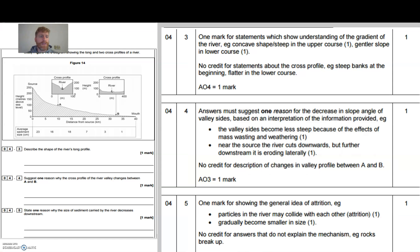Okay, so let's have a look at the answers then. Question one asked you to describe the shape of the river's long profile from figure 14. You got a mark for statements which show understanding of the gradient of the river. For example, if you said it was a concave shape, or if you said it was steep in the upper course, that was a mark. If you said it had a gentle slope in the lower course, that was a mark.